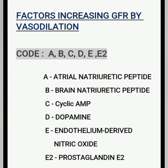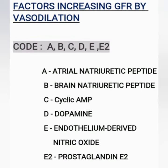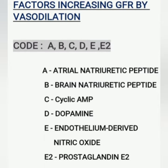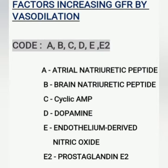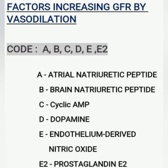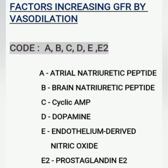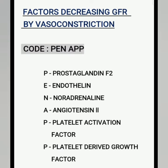Factors increasing GFR by vasodilation — mnemonic: CODE. A: Atrial natriuretic peptide. B: Brain natriuretic peptide. C: Cyclic AMP. D: Dopamine. E: Endothelium-derived nitric oxide. E2: Prostaglandin E2.